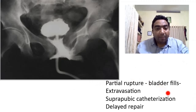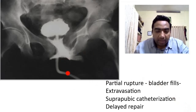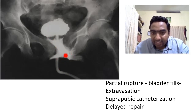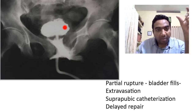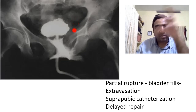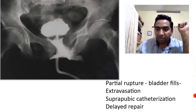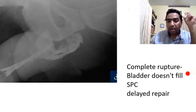In partial rupture of the urethra, the urethra is only partially ruptured, so the bladder may fill but there will be extravasation of urine. We must perform suprapubic catheterization under ultrasound guidance, and a delayed repair is generally done once the patient is completely stable.